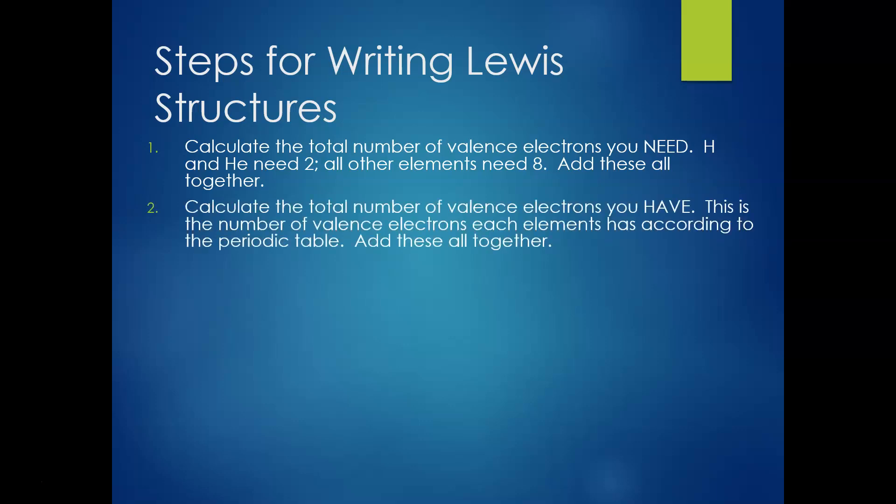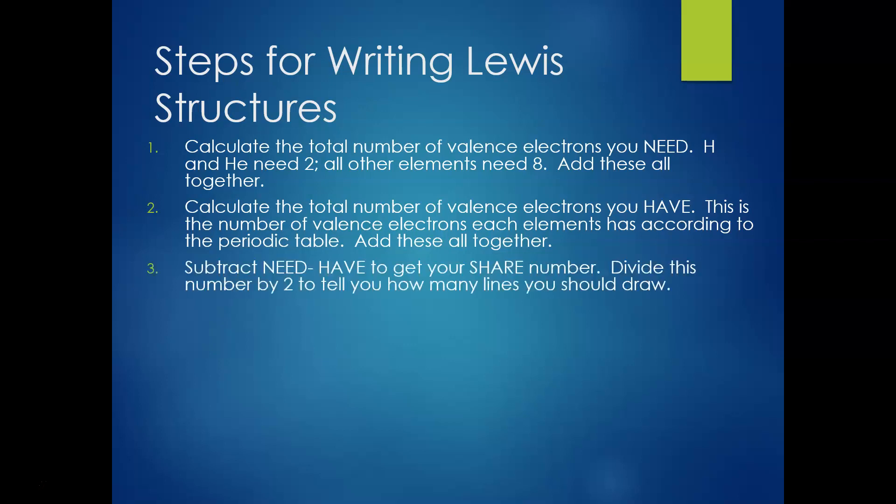Then you're going to calculate the total number of valence electrons you have, which I'll refer to as the 'have.' This is the number of valence electrons each element has according to the periodic table — that's one, two, three, four, five, six, seven, eight as we move across. If you have multiple of something, you multiply its valence electrons by how many you have, then add all of these together to get your 'have' number. You then subtract the 'have' from the 'need' to get what I'll call your 'share' number.